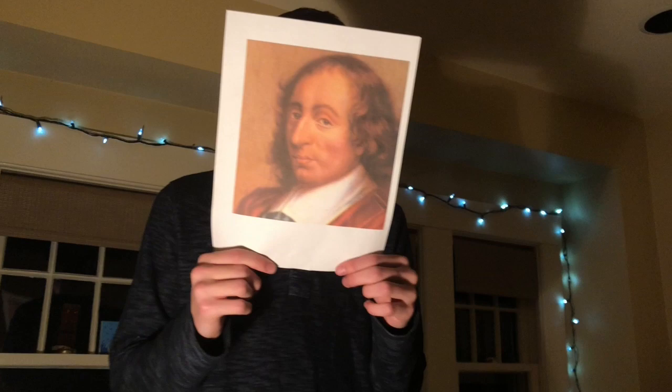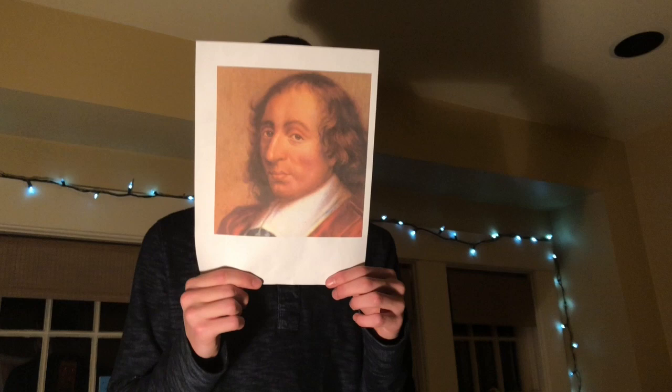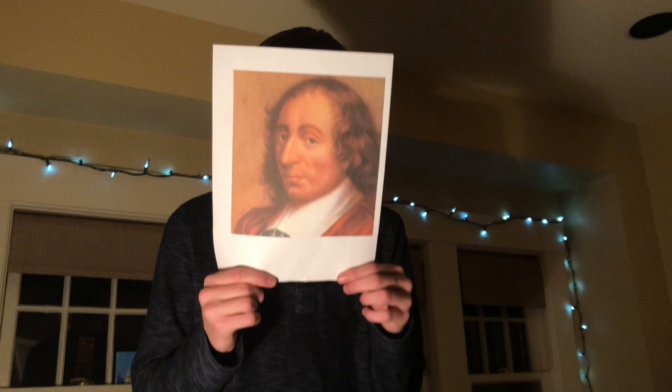My treatise on the Arithmetical Triangle of 1654 described a convenient tabular presentation for binomial coefficients, now called Pascal's Triangle. Binomial coefficients is the number of ways of picking unordered outcomes from possibilities, also known as a combination or combinatorial number. The triangle can also be represented like this.